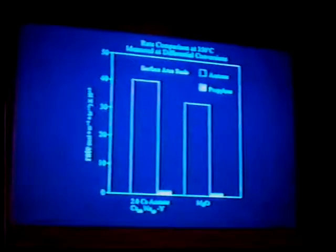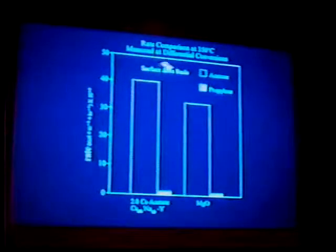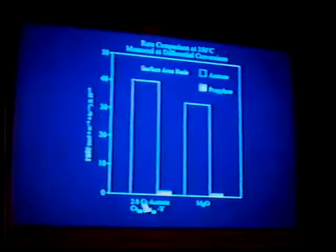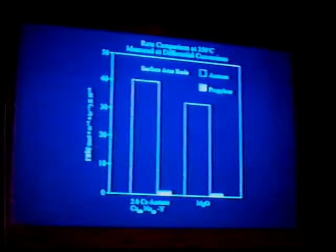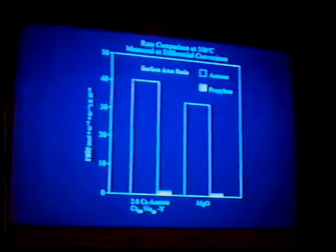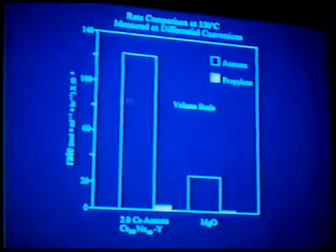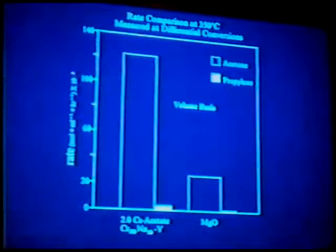How active are these materials compared to magnesium oxide, a commercial base catalyst? Again, rate comparison at 350 degrees, intrinsic differential conversions. On a surface area basis, the impregnated Y performs quite comparably to magnesium oxide, both in activity and selectivity to acetone. On a volume basis, we're about four times more active than magnesium oxide. So it appears that we have a nice activity as well.